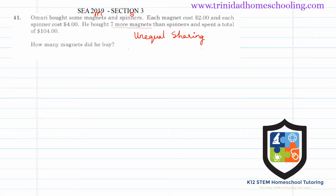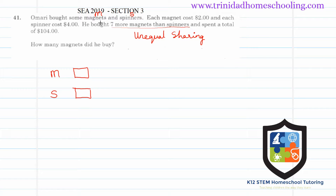The phrase 'seven more magnets than spinners' gives us an indication of where the number of magnets and spinners start to become unequal. Like all our previous questions, we list our items — magnets and spinners — with some equal number of each. The unequal part begins where he bought seven more magnets than spinners, so we mark off seven extra units: one, two, three, four, five, six, seven.